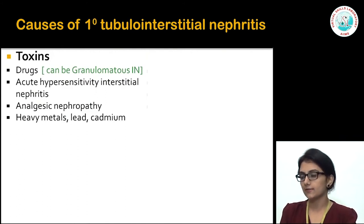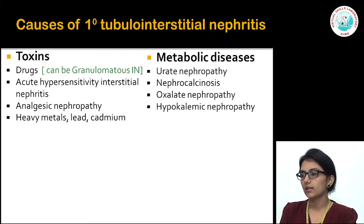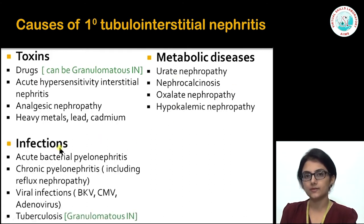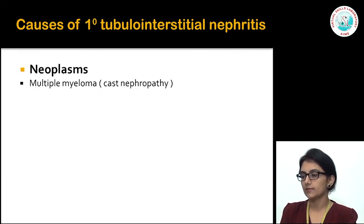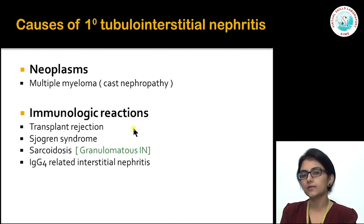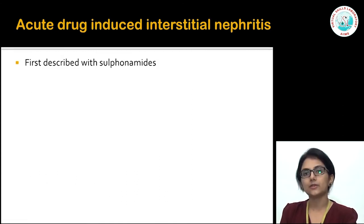The causes of TIN form a very long list. Key categories to remember include toxins, particularly drugs and heavy metals; metabolic diseases; infections; physical factors particularly obstruction and radiation; neoplasms; immunological reactions including some newer entities; and genetic causes of tubular interstitial nephritis.